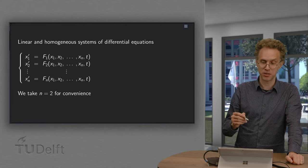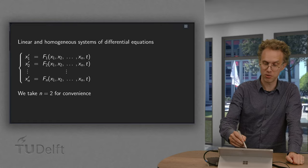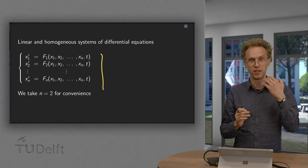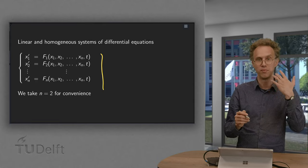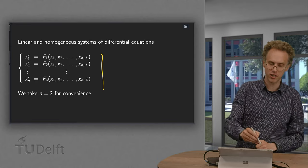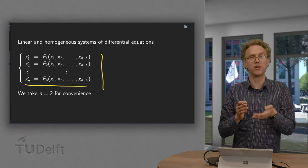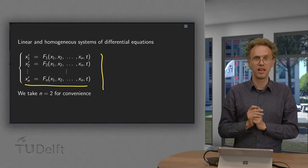In general, our systems of differential equations look like this: x1 prime equals some function of x1, x2, up to xn and t. And same for x2 prime with a different function. And finally, xn prime is also some function of x1, x2, up to xn and t.